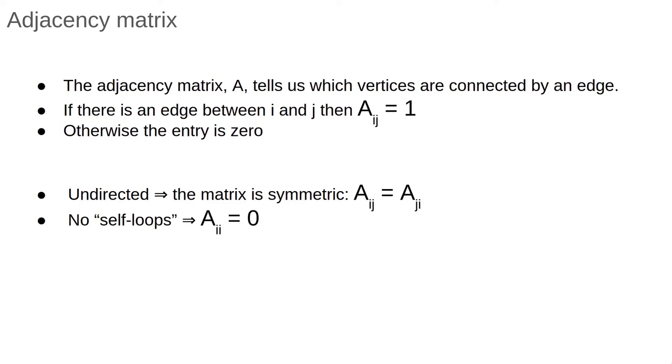Usually, we have no connections of the nodes to themselves, that is, loops. Loops are also called self-connections or self-edges. These are typically not useful to consider. Think about a social network. Are you friends with yourself? When we don't have self-loops, this means that the diagonal of the adjacency matrix is all zeros.